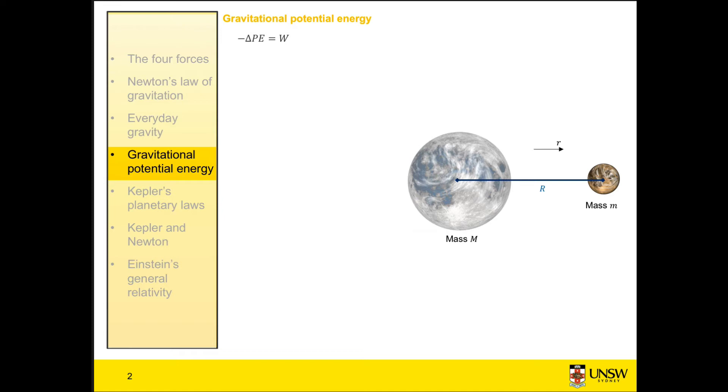We know that at a distance of infinity from our large object, there is no longer any force due to gravity from it. So the gravitational potential energy at an infinite distance is equal to zero.